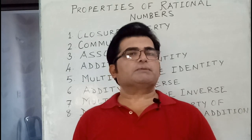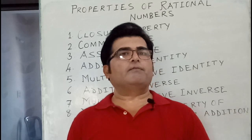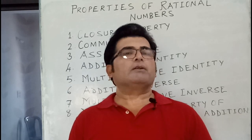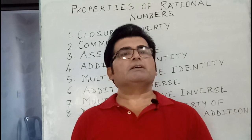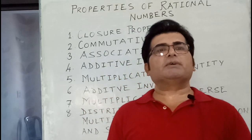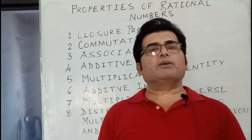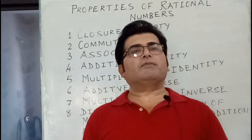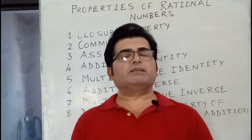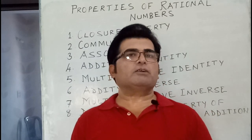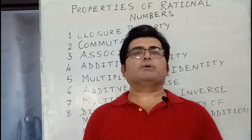So we say that minus one upon two is the additive inverse of one upon two. Or, if you take minus three upon five as a rational number, its additive inverse will be positive three upon five, because if you add minus three upon five and positive three upon five you get zero. So the sum of a rational number and its additive inverse is always zero.